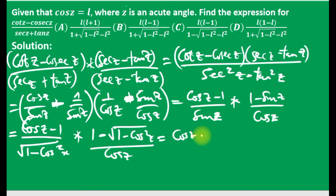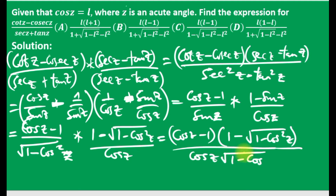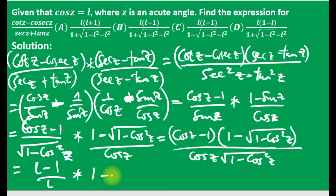Multiplying through, we have cos z minus one times one minus square root of one minus cos squared z, over cos z times square root of one minus cos squared z. Now we substitute cos z equals L, writing this as L minus one over L times one minus square root of one minus L squared over square root of one minus L squared.